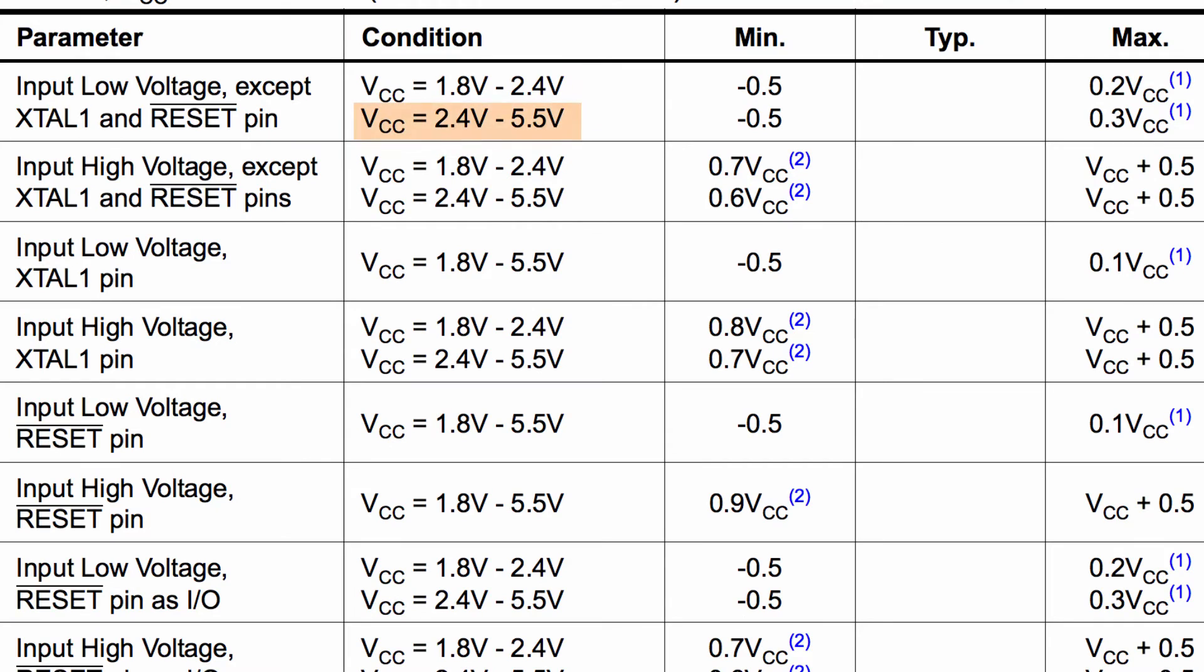It says if we have a VCC between 2.4 and 5.5 volts, then the maximum that it would read as a low is 0.3 VCC. Well, VCC is just the digital supply voltage. That's just how much voltage are we supplying to our Atmel chip. For us using most Arduino boards, it's fair to say that you're going to be applying 5 volts to that chip. So 5 volts is what our VCC is.